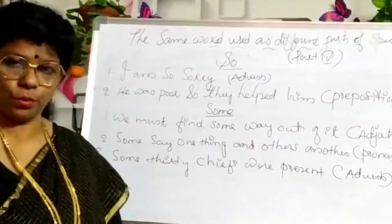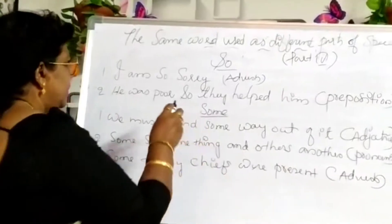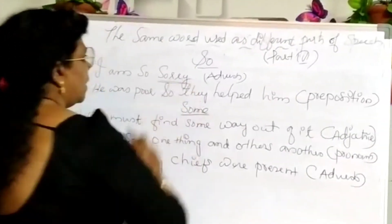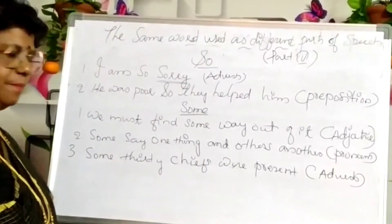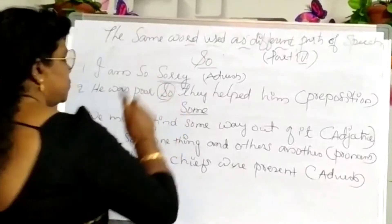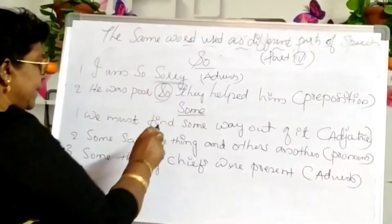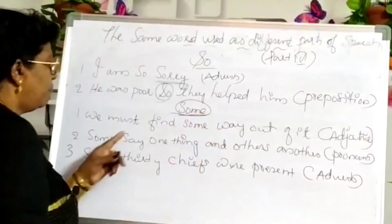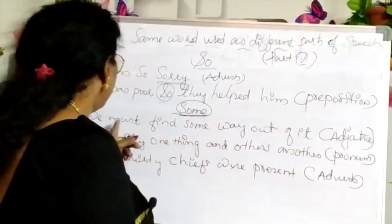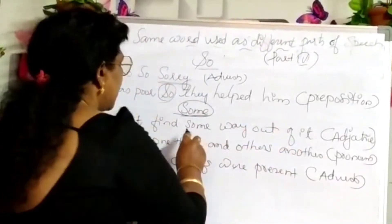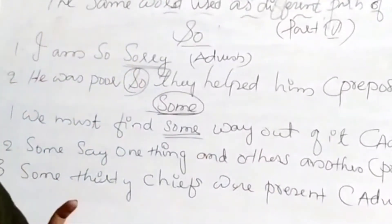Let us start with the word 'so.' In 'I am so sorry,' the word 'so' functions as an adverb. In 'He was poor so they helped him,' 'so' shows a preposition. The next word is 'some.' In 'We must find some way out of it,' the word 'some' shows an adjective.